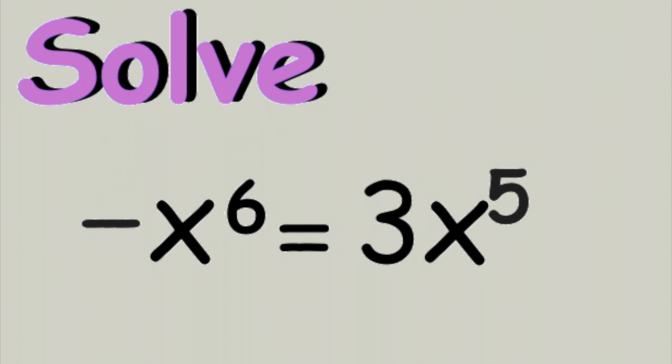So we have this short little equation to solve. Negative x to the sixth power equals three times x to the fifth power.